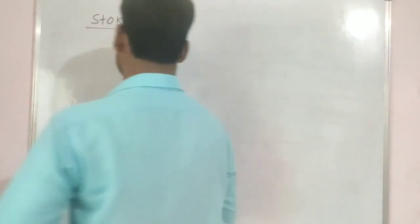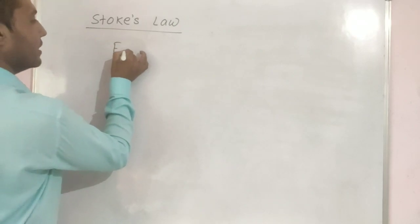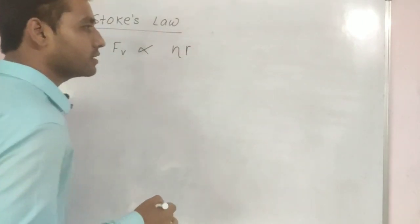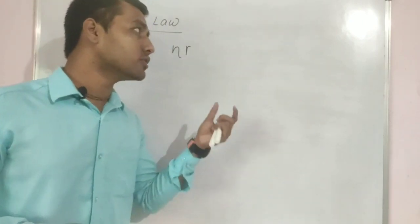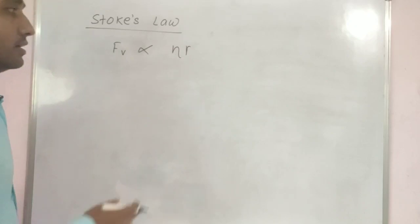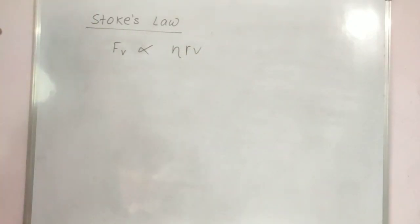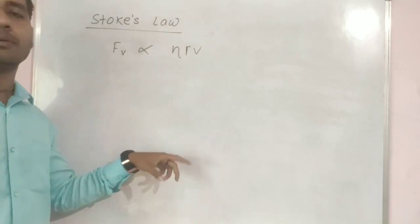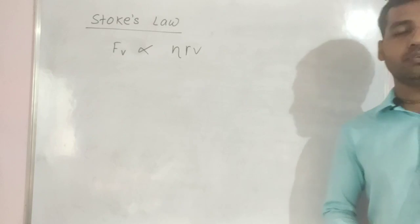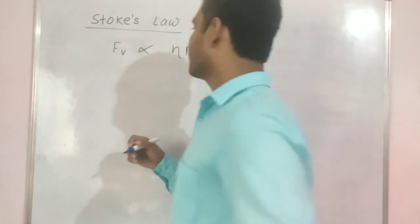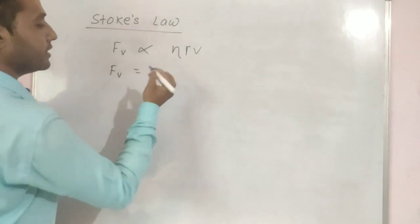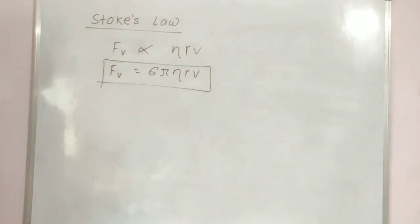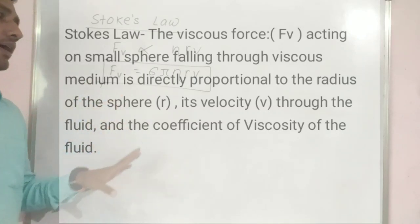According to Stokes law, the viscous force Fv is directly proportional to the coefficient of viscosity eta, the radius r of the sphere, and its velocity v. The experimentally determined constant is 6π, so the formula for Stokes law is: Fv = 6πηrv. Here Fv is the viscous force.